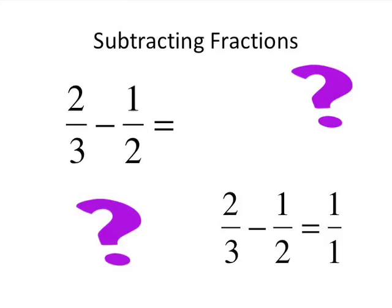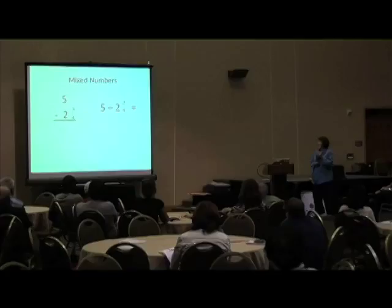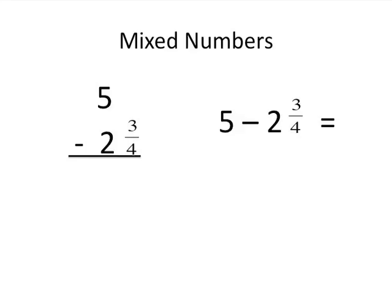So if we follow that same rule in subtracting fractions, does 2 3rds minus 1 half give us 1 over 1? Mixed numbers. How many of your kids would write 3 and 3 fourths as the answer, despite giving them step after step what they need to do? Why not think about 5 minus 2 is 3? And then let's take off 3 fourths. We don't stop to teach kids to think about what those numbers mean.